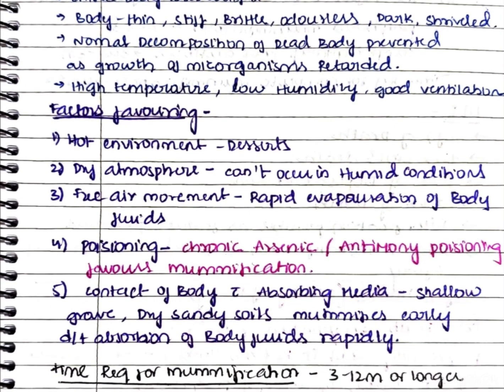Factors favoring mummification: first, a hot environment — mummified bodies are commonly seen in Egypt near the Sahara Desert, where the hot environment promotes evaporation of water. Second, a dry atmosphere also leads to evaporation of water and favors mummification. Third, free air movement helps in rapid evaporation of body fluids, further favoring mummification.